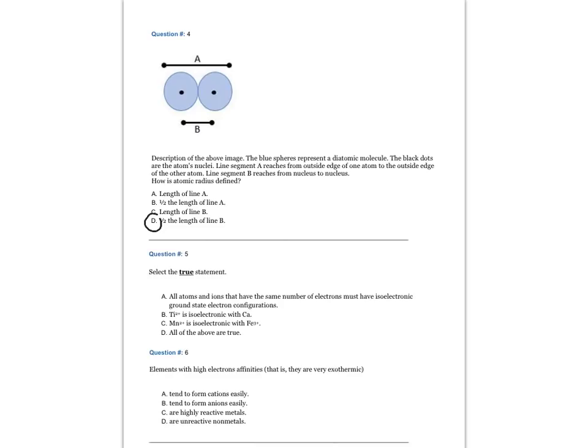Question number five: Select the true statement. The answer is C, manganese 2-plus is isoelectronic with iron 3-plus.